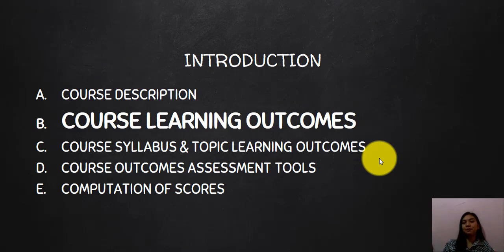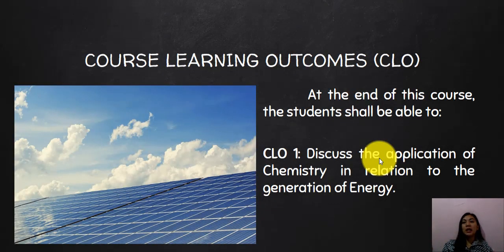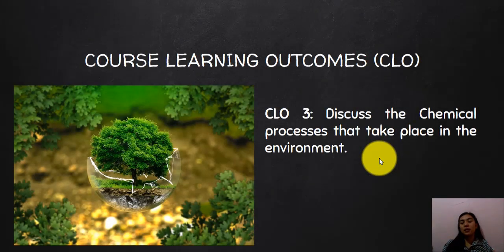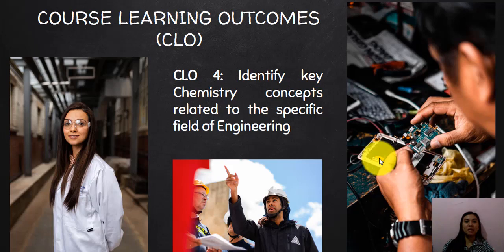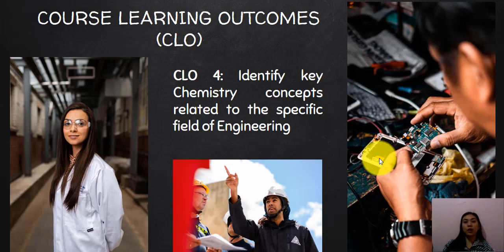The second part covers the course learning outcomes, commonly referred to as CLOs. At the end of this course you should be able to: CLO 1 — discuss the application of chemistry in relation to the generation of energy; CLO 2 — explain the chemical principles and concepts of structures and bonding of common materials; CLO 3 — discuss the chemical processes that take place in the environment; and CLO 4 — identify key chemistry concepts related to your specific field of engineering. We have four course learning outcomes in total.